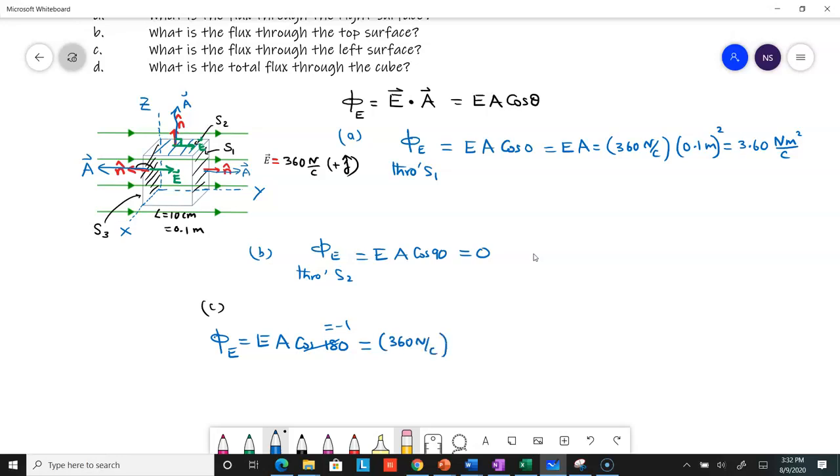These are the magnitudes. Substituting, cos(180°) = -1, so it's 360 newtons per Coulomb times 0.1 meter squared times -1, giving you the exact same value: -3.6 newton·meter squared per Coulomb.